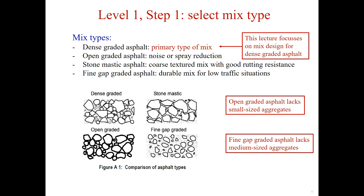Stone mastic asphalt is primarily used for highway traffic roads, but it can be used for all types of pavements. A fine-gap-graded asphalt mix is a dense, low-air-voids mix but with intermediate-sized fractions replaced by finer fractions. It is the durable mix for low-traffic situations such as residential streets and other light-duty applications.